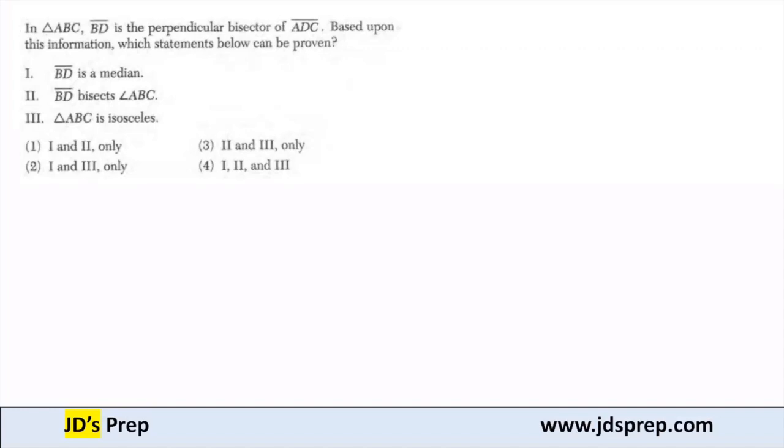Hello, welcome to JD's prep. In this example, triangle ABC, BD is the perpendicular bisector of ADC.